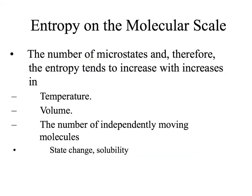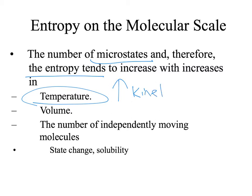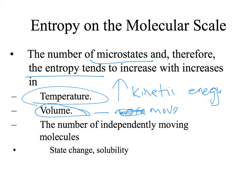The number of microstates for any substance, and therefore the entropy of that substance, increases with temperature, because temperature increases kinetic energy. The more energy of motion you have, the more microstates you can have, because you can move around more. Also, the greater volume you have for something, the more your molecules can move around — more space to expand. If they can move around more, they can distribute their energy in different ways, so their entropy or thermal disorder would be greater.